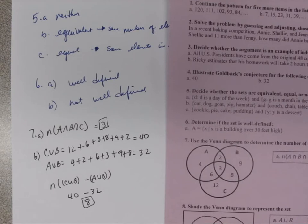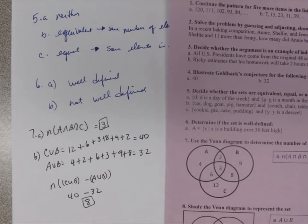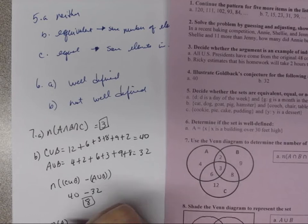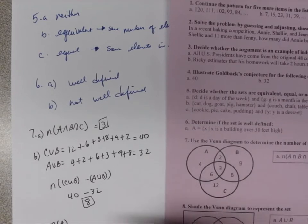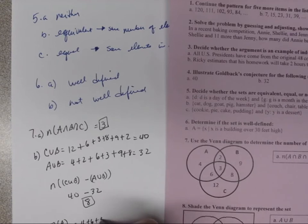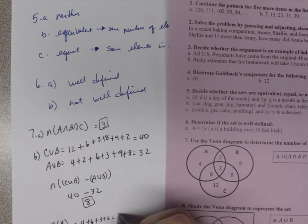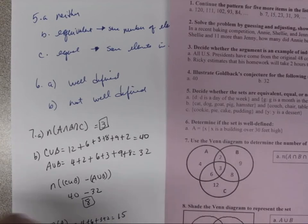For Part C, we find the number of elements in A. Adding the values in A: 4 plus 6 plus 3 plus 2 equals 15. So N(A) = 15.